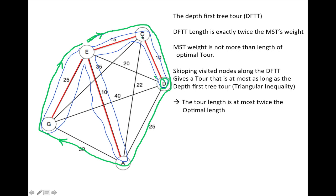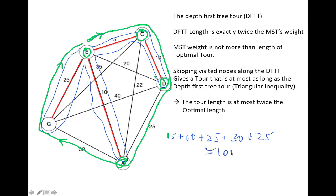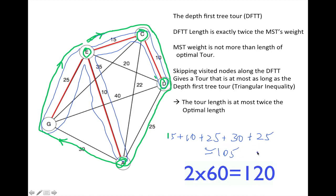For example, going from D through C to E to A has a longer distance than going directly from D to A. Similarly, from A to G is shorter than going from A to E and then to G. So the shortcut distances are at most as large as the detour distances. The actual distance we get is 15 + 10 + 25 + 30 + 25, which is 105. The length of the minimal spanning tree was 60, and twice that is 120 — so we confirm that the tour length of 105 is indeed shorter than the 2× bound.